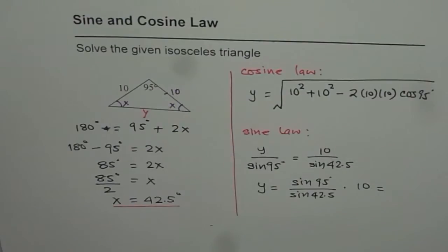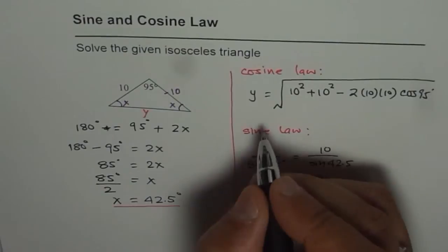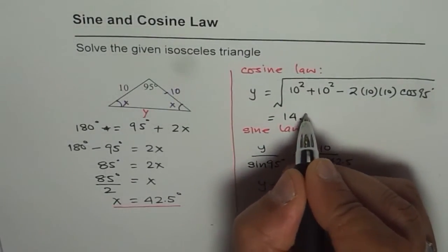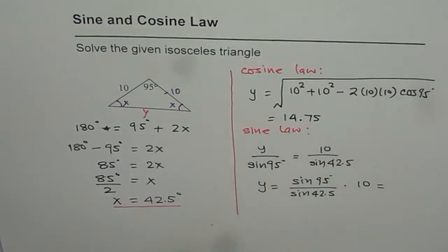So which is square root 10 squared plus 10 squared minus 2 times 10 times 10 times cos of 95 degrees. So that is equal to 14.745. So I can write this answer as 14.75 units.